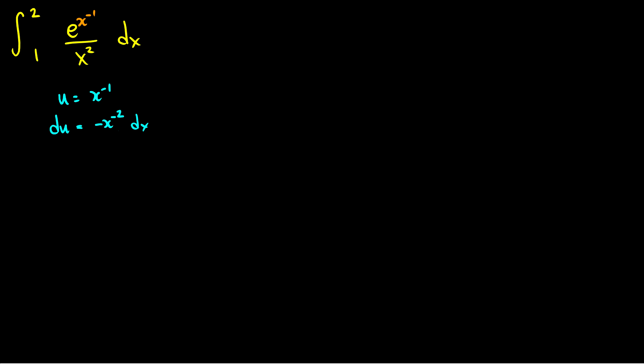Well we have a negative that we don't want so we can take negative du equals x to the negative 2 dx. But what is x to the negative 2? That is just 1 over x squared. Now things look a little bit nicer.